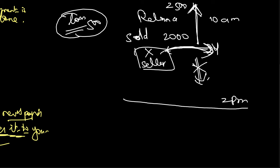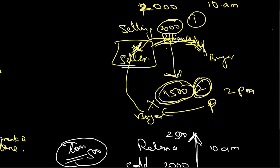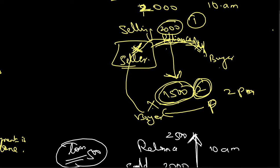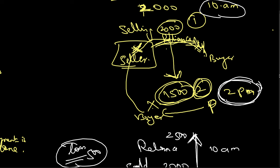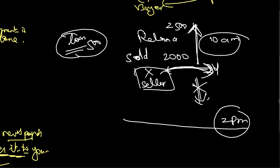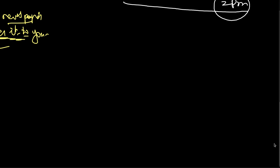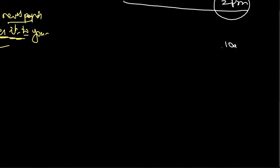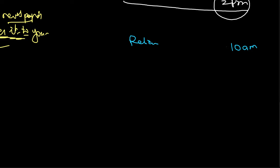So Case 1 is when the market went as per your prediction and you made profit. Case 2 is when the market did not go as per your prediction and you made a loss. In both cases, you are buying on the same day — you entered the transaction at 10 a.m. and squared off at 2 p.m. Now Case 3: at 10 a.m. Reliance is trading at 2,000.